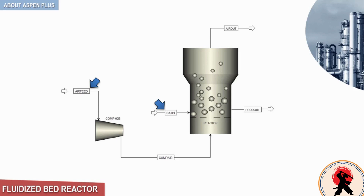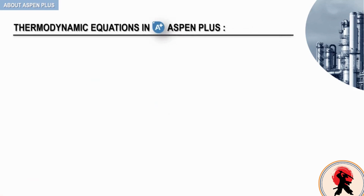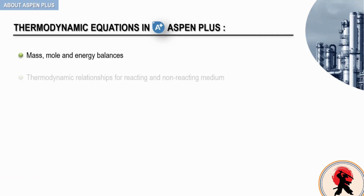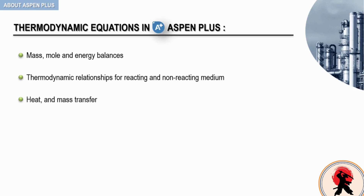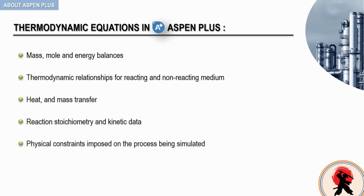The purpose of ASPEN PLUS is to allow you to predict the behavior of a chemical process using basic engineering relationships and thermodynamic equations. These equations describe mass, mole and energy balances, thermodynamic relationships for reacting and non-reacting media such as phase and chemical equilibrium, heat and mass transfer, reaction stoichiometry and kinetic data, as well as physical constraints imposed on the process being simulated, which are user-defined.